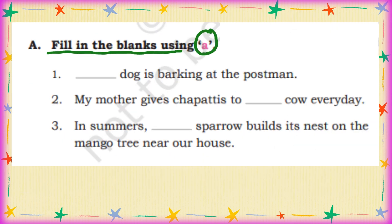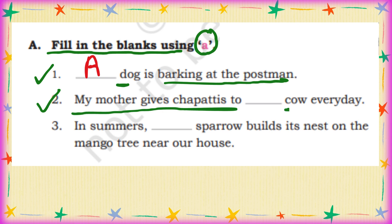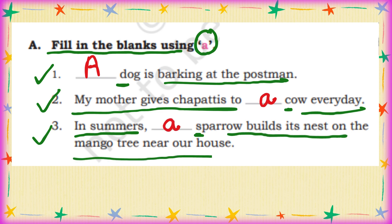Fill in the blanks using A. 'Dog' starts with D, which is a consonant, so: A dog is barking at the postman. 'Cow' starts with C, which is a consonant, so: My mother gives chapatis to A cow. 'Sparrow' starts with S, which is a consonant, so: A sparrow builds its nest on the mango tree near our house.